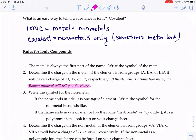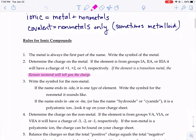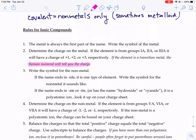The next part is writing the symbol for the non-metal. If the name ends in the letters I-D-E, it's generally one type of element. Write the symbol for whatever non-metal it kind of sounds like. If you heard the word chloride, that kind of sounds like chlorine, so you'd write that symbol down. Or if you heard oxide, that kind of sounds like oxygen, so you'd write that symbol down.